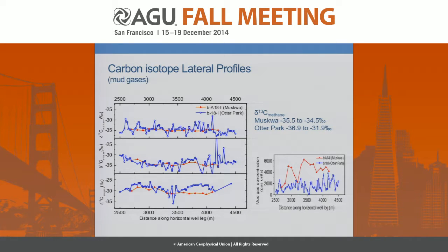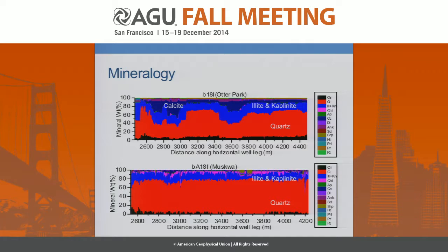This is before fracking. It tells you, at least in my interpretation, that one of the formations has a fairly uniform reservoir — maybe the gases had a chance to mix — whereas in the other formation, the gases have been compartmentalized. This is not surprising when you look at the mineralogy from the same drill cuttings from that well. The Otter Park, which showed the big isotope and composition variation along the lateral length, also has mineralogical variations, whereas the formation that was smooth has uniform mineralogy.